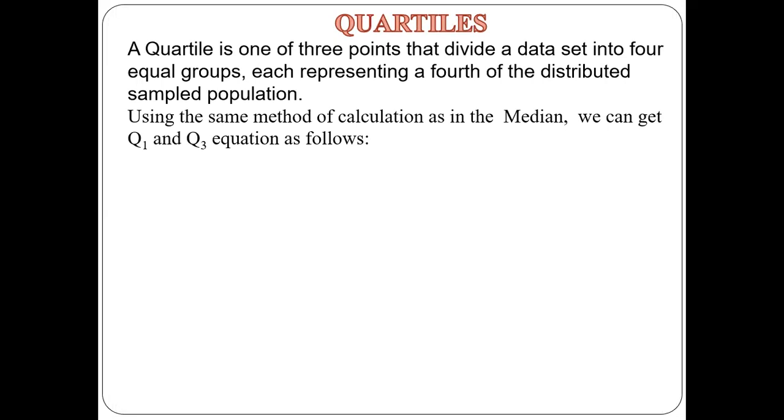Using the same method of calculation as in the median, as we have seen in one of our previous videos, we can get Q1 and Q3 equations as follows. Q1 here is the lower quartile, which is equal to L_Q1 plus (n/4 minus F) divided by F_Q1, multiplied by i.